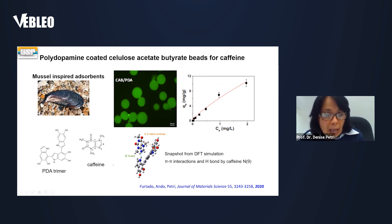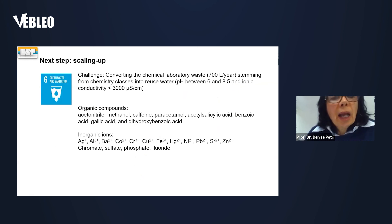The next step is scaling up to large columns and to try to convert chemical laboratory waste, which we have about 700 liters per year from our chemistry classes into reuse water. Today they are sent to incineration, but we want to use filters that the students will prepare based on these renewable materials. And the students will treat the laboratory waste. And it's our contribution. We understand that it could be a small contribution, but it would be a contribution to goal six from the United Nations, clean water and sanitation.